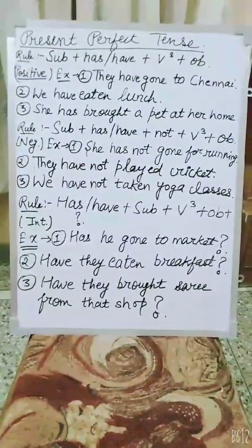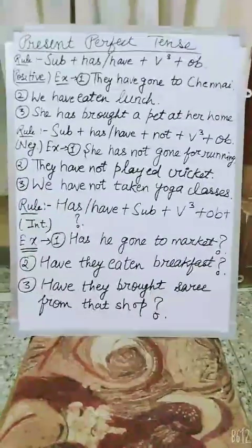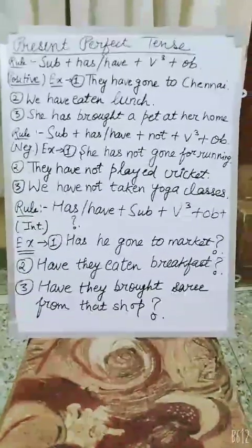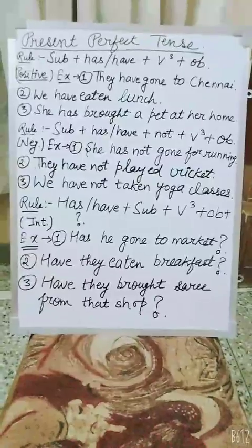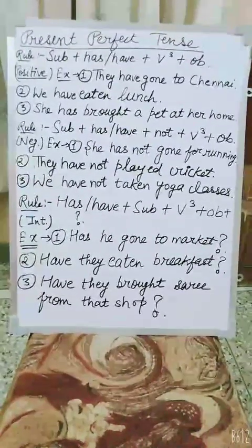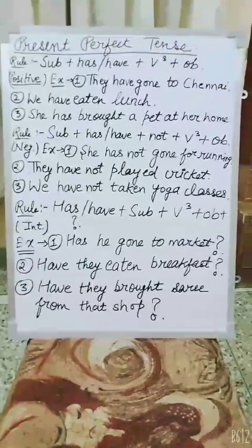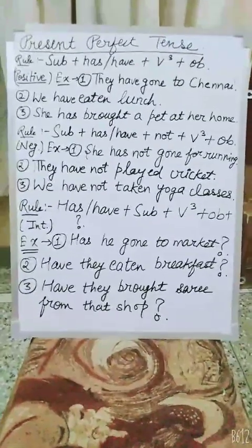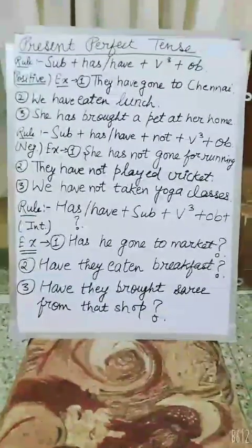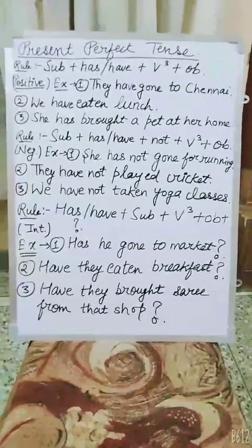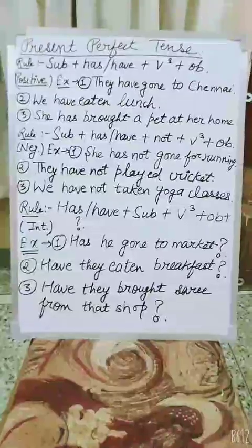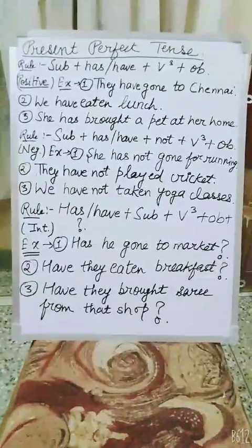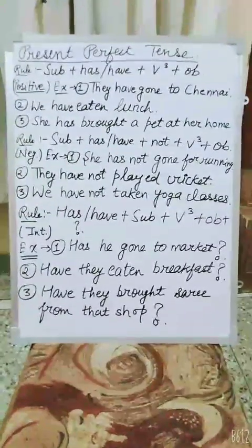The second negative example is: 'They have not played cricket.' 'They' is the subject, 'have' is the helping verb, 'not' is for negative, 'played' is the verb's third form, and 'cricket' is the object. Third example: 'We have not taken yoga classes.' 'We' is the subject, 'have' is the helping verb, 'not' is for negative, 'taken' is the verb's third form, and 'yoga classes' is the object.